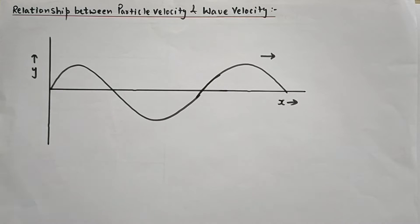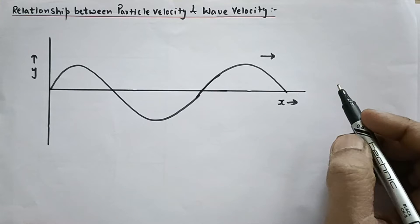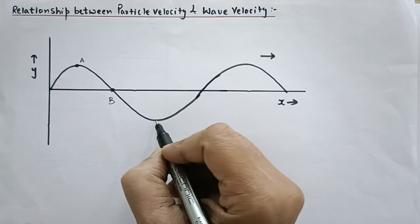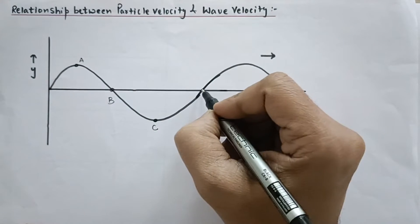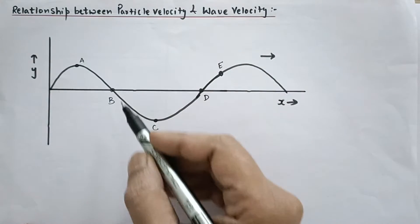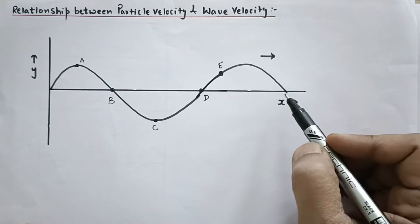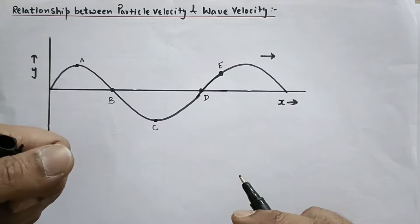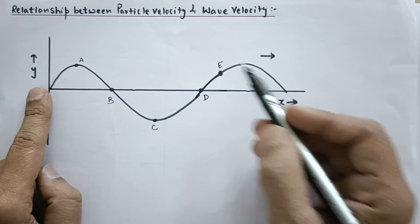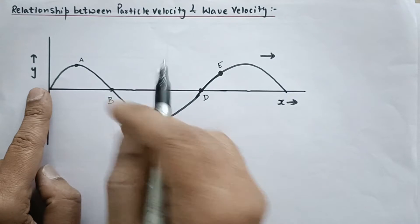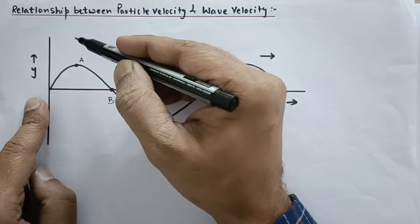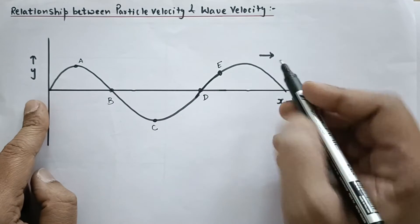Here there is a transverse wave moving in the positive x-direction. Let me take different particles: particle A, particle B, particle C, particle D, and particle E. These are basically the particles of the rope. We are creating a transverse wave on a rope by giving a jerk on one side, and the rope turns out like this. You will see the crest and trough moving in the plus x-direction. We are going to investigate the velocity of these oscillating particles with respect to the wave velocity, which is in this direction.